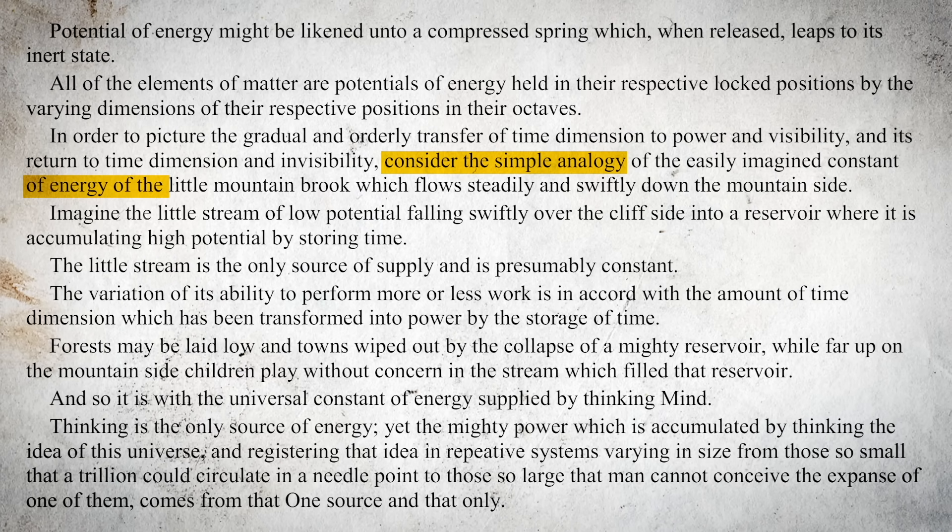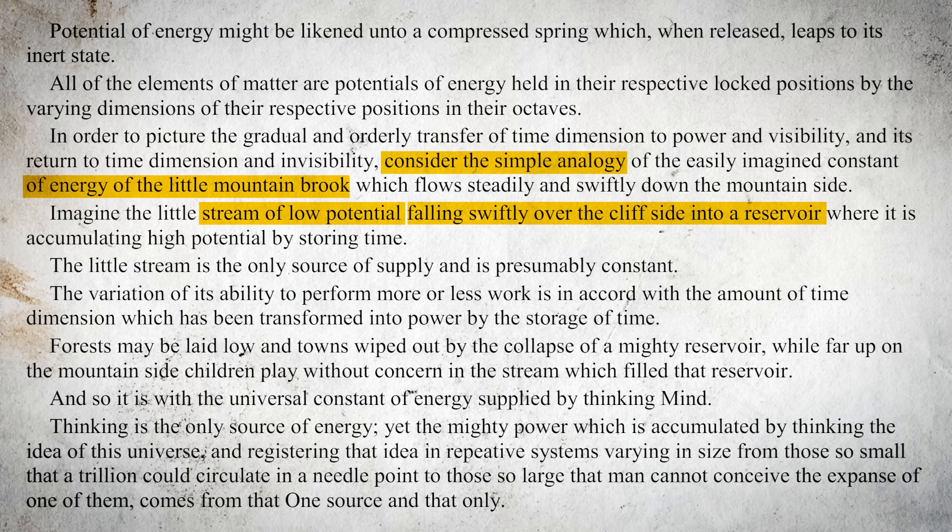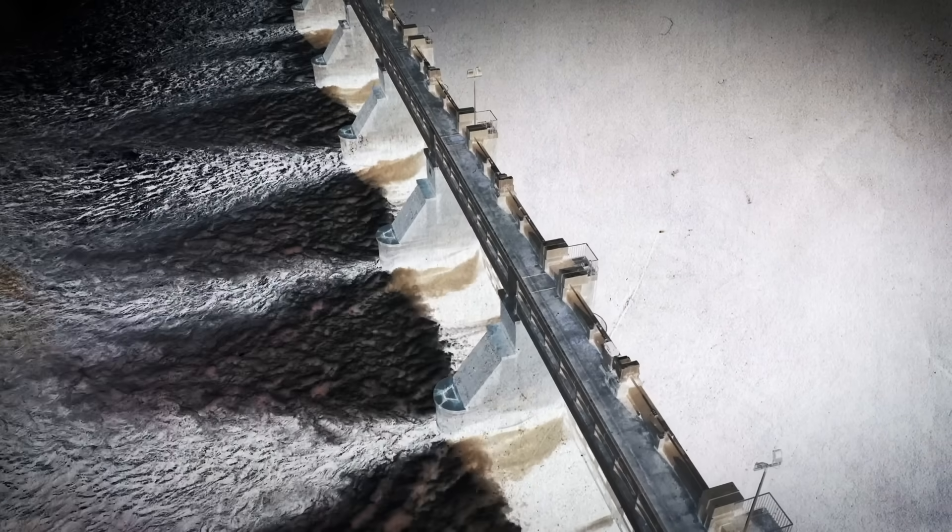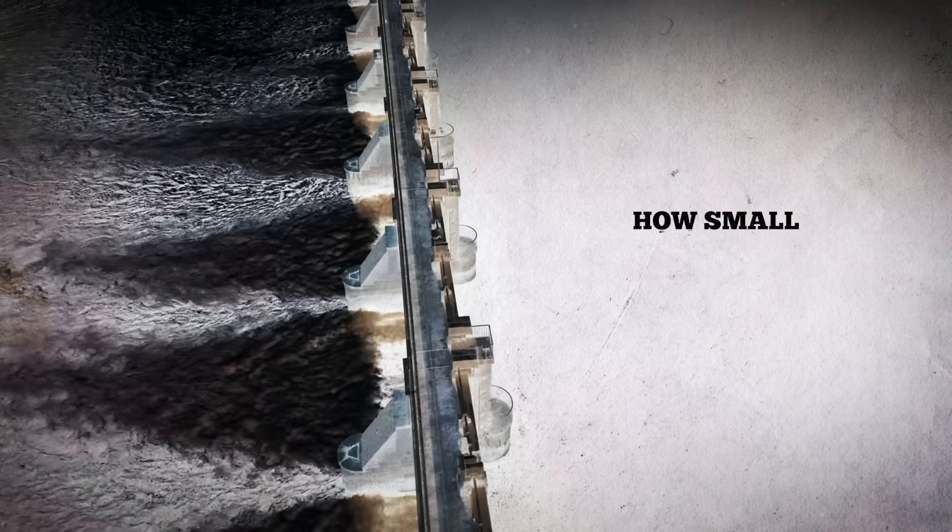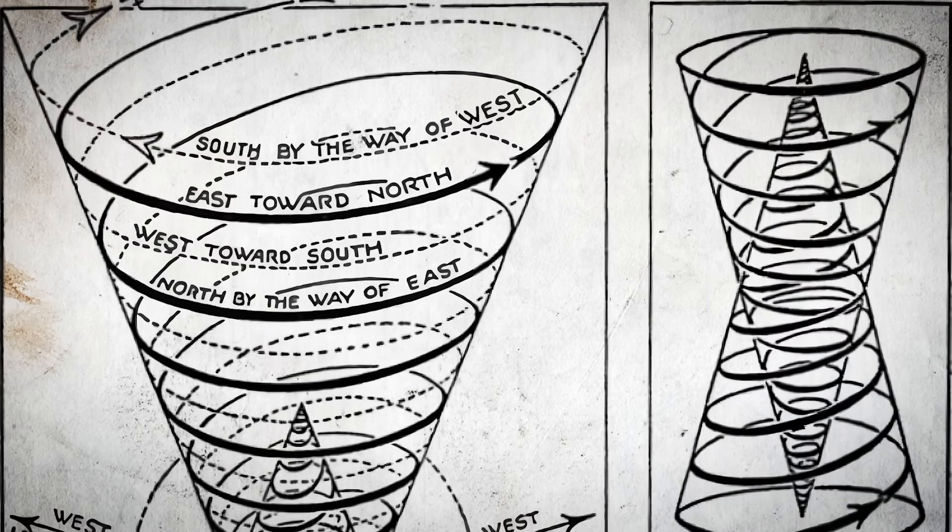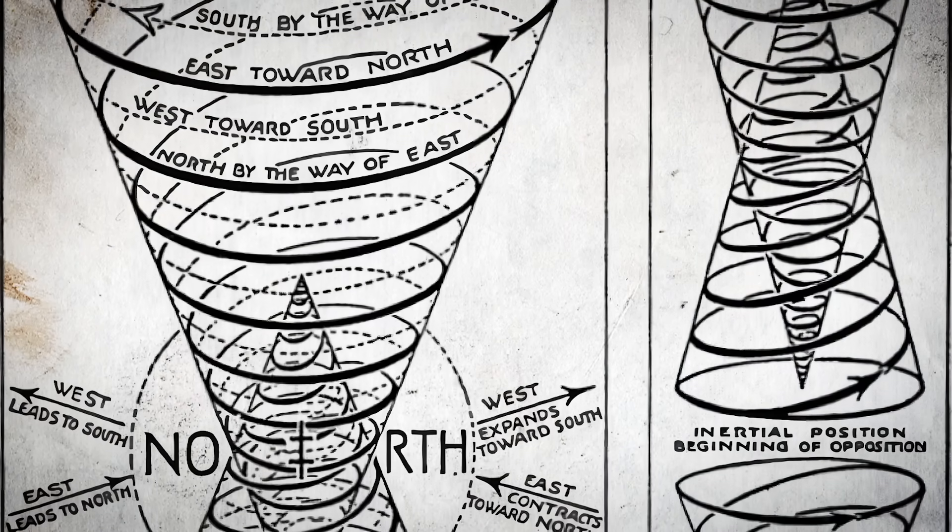Russell employs a vivid analogy to illustrate these concepts, a mountain brook flowing down into a reservoir. This brook represents a constant flow of energy at low potential, swiftly moving and performing minimal work. As it falls into the reservoir, it accumulates potential by storing water, akin to storing time. The reservoir, with its stored potential, can unleash significant power, capable of laying low forests or wiping out towns, mirroring the destructive potential of released energy. This brook and reservoir metaphor beautifully encapsulates how small, consistent inputs of energy can accumulate over time into a powerful force, much like the elements in the 10-octave cycle, accumulating energy across different states.